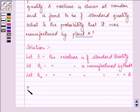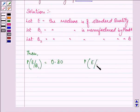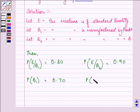Now we are given that probability that the machine is manufactured in plant A and the machine is of standard quality is given to us as 80%, that can be written as 0.80, and the machine is of standard quality and is manufactured by plant B is given to us as 90%, that is 0.90. Also, probability that the machine is from plant A is 70% and probability that the machine is from plant B is given to us as 30%.